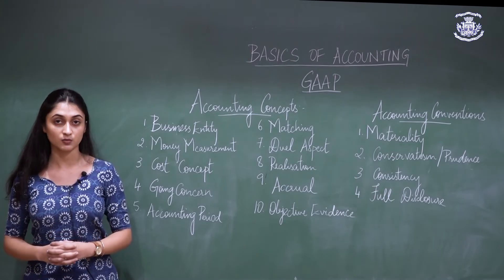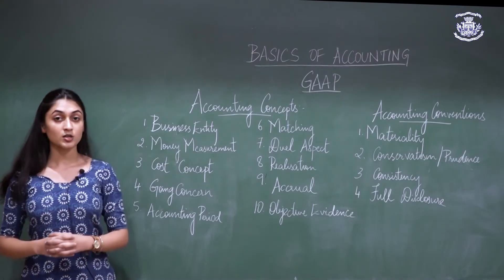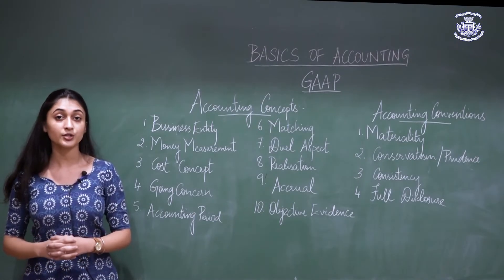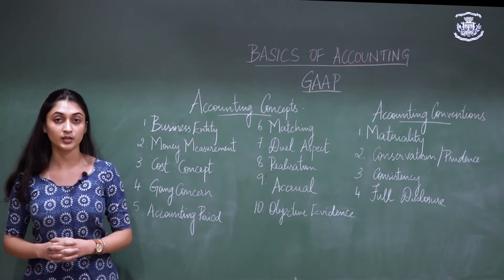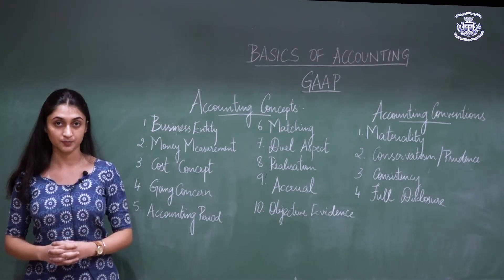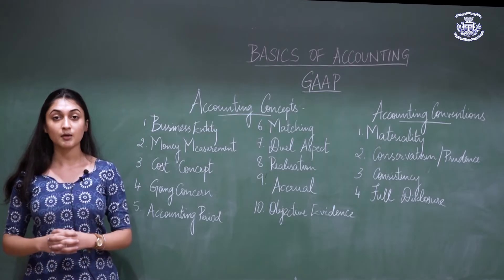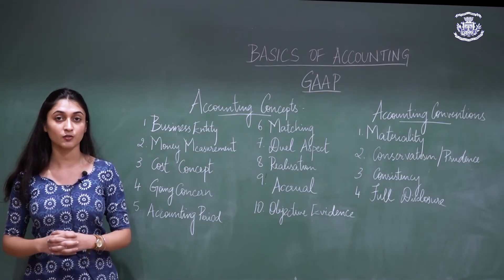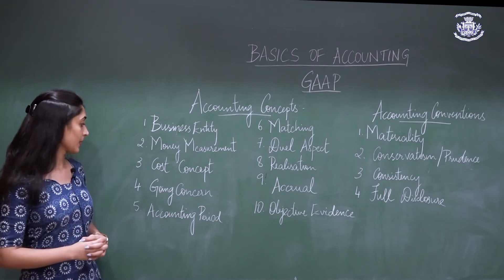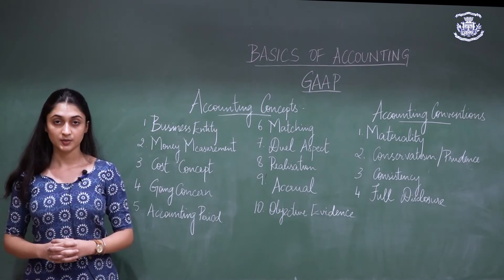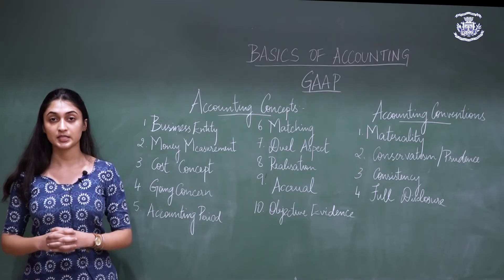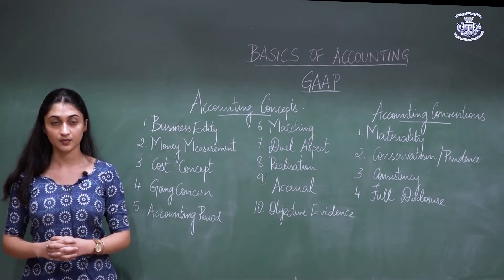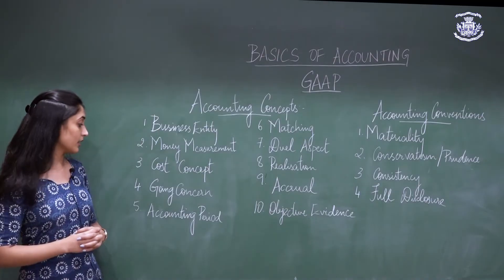The cost concept states that all transactions are to be recorded at the cost of acquisition — for example, the company is to record all their assets at the purchase cost of the asset. The going concern concept states that the business has infinite duration.